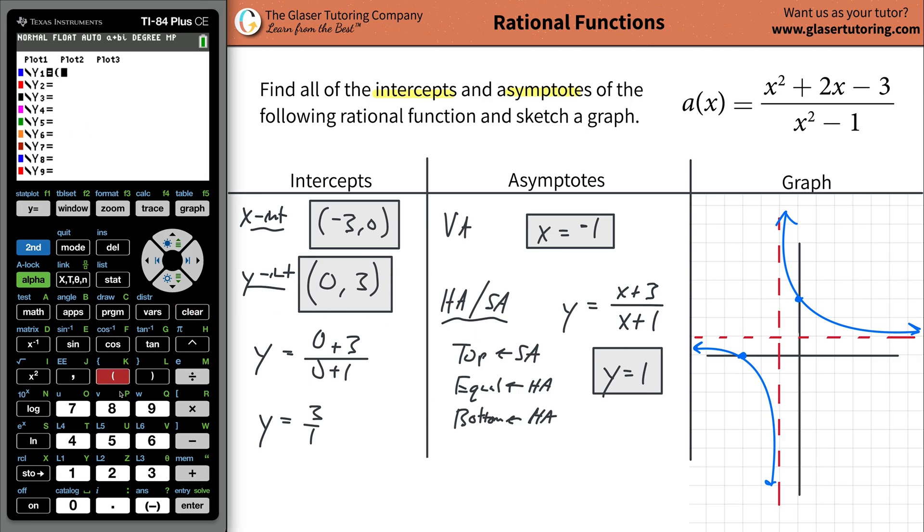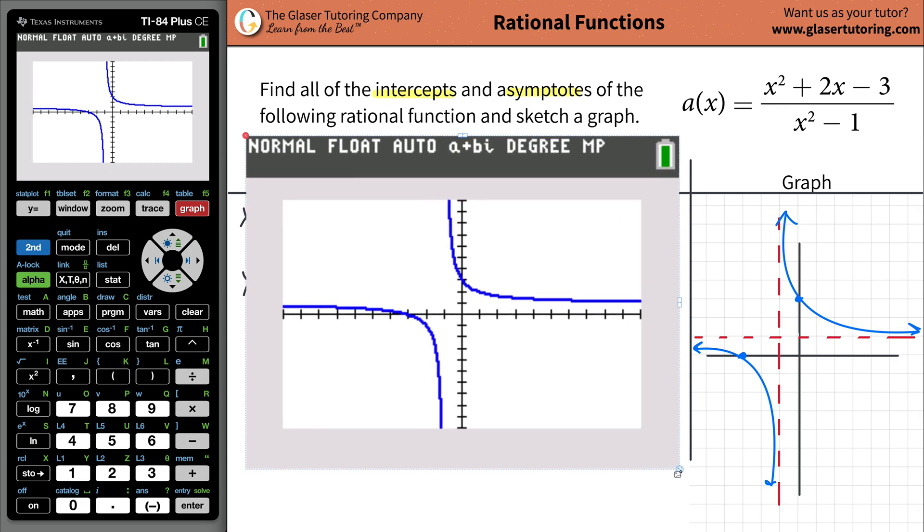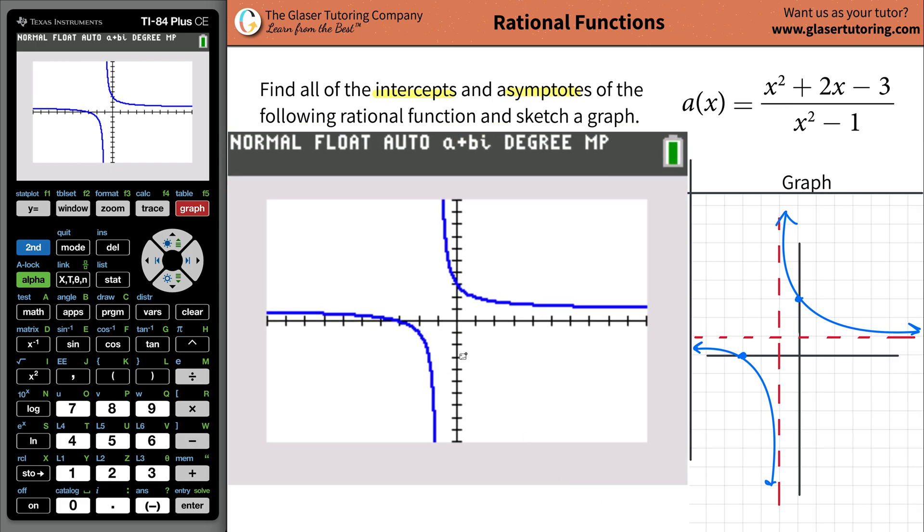And you can double check this by graphing it. So you can do x² + 2x - 3, and then divide it by now x² - 1. I keep doing that. So you hit graph. Look at how beautiful that is.